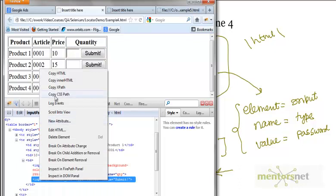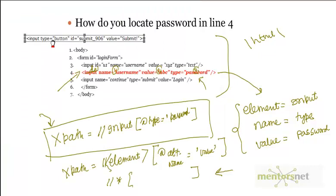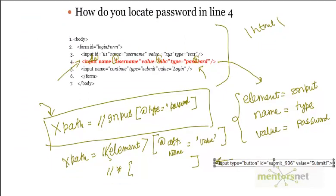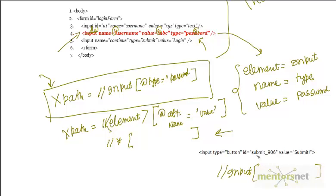Let me copy the HTML and paste it here. My element name is input, so I write double slash input, then square brackets, then the attribute name is type preceded by @. This XPath will work. That is how you do it.